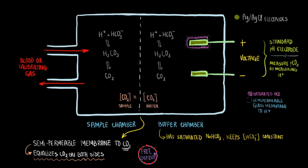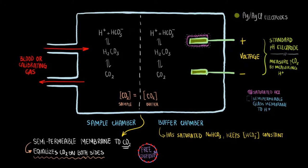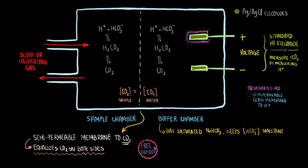So the idea is that carbon dioxide levels in the sample chamber equilibrate with the CO2 levels in the buffer chamber. Then that level will influence the level of hydrogen ions via the redox reaction. And finally, the pH electrode will detect the level of hydrogen ions and spit out a corresponding voltage.